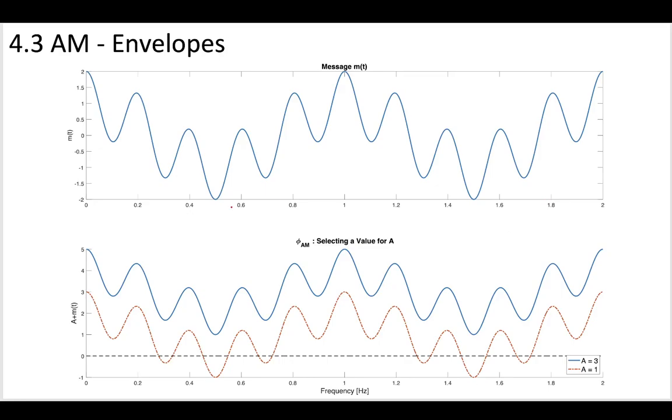So let's imagine adding two different values of A to our message. So we have our message here, we can add two different values. So if we added a big value of three, then the peak would go from two up to five. And this would bring clearly, it would bring this whole message plus A, it would make it so that it's all above zero here.